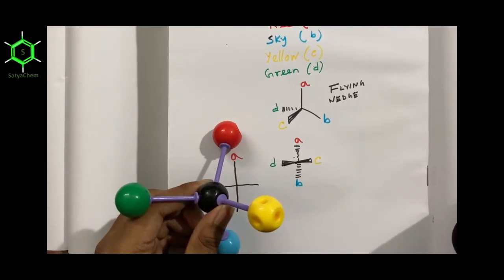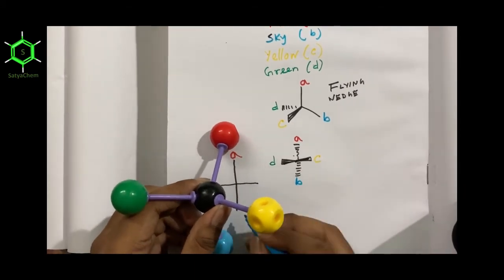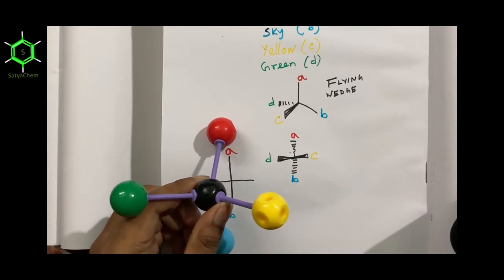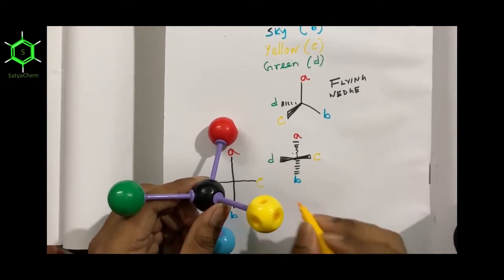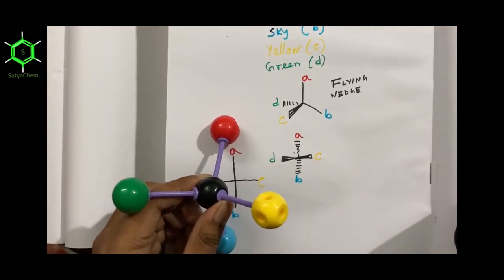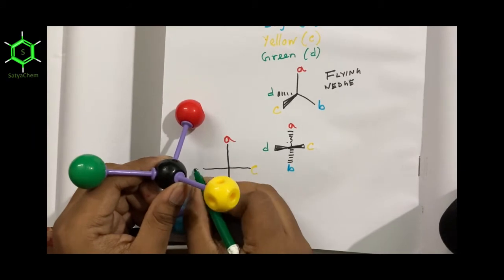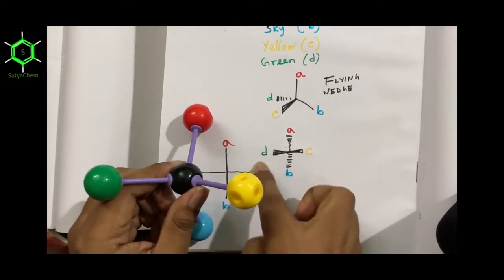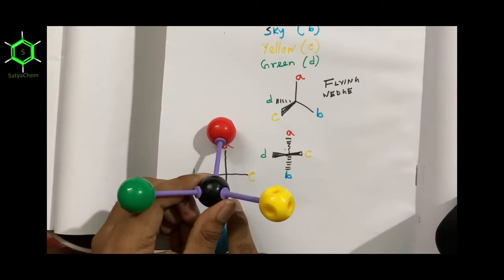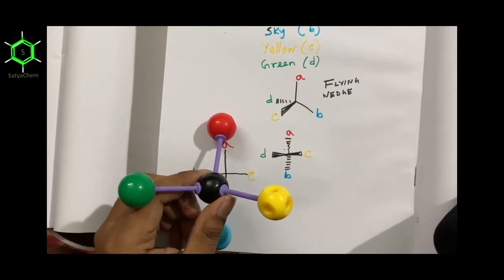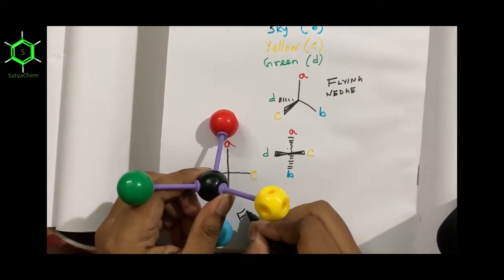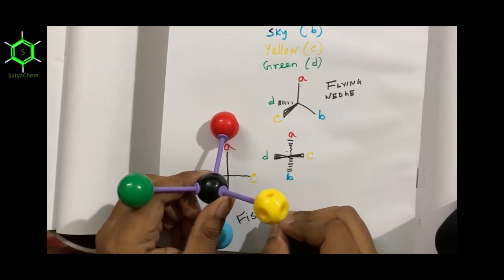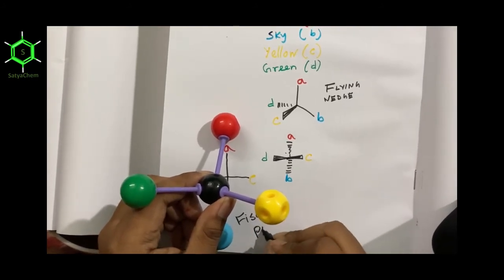Now we take the projection. At the top this is A, this is B, this is C, and this is D. After taking the projection we get the Fisher projection. That is how we can convert a flying wedge representation to a Fisher projection.